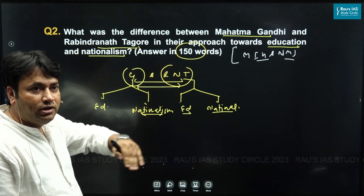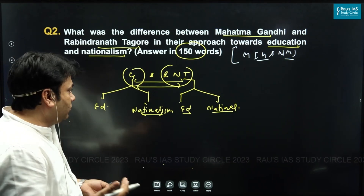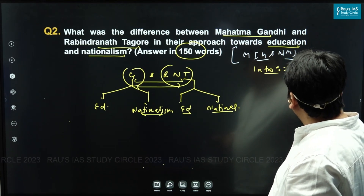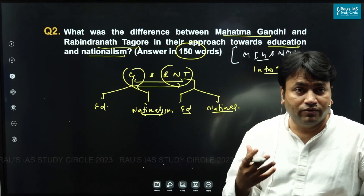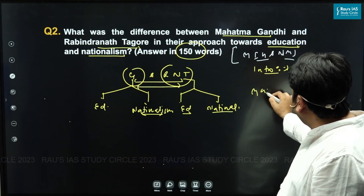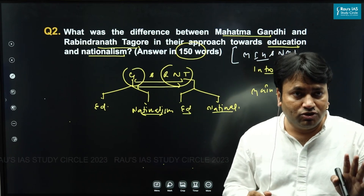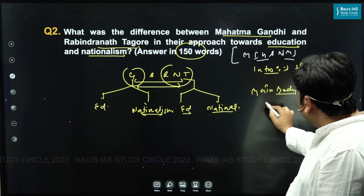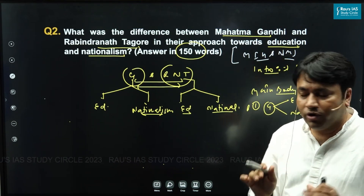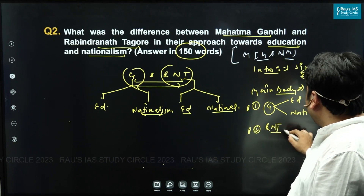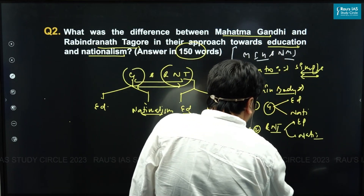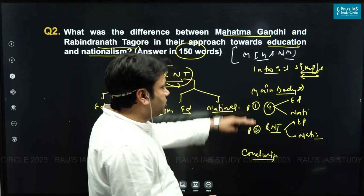While writing the answer, we will follow the IBC format: a simple introduction, then divide the main body into two parts — Part 1 covering Gandhi's ideas on education and nationalism, and Part 2 covering Rabindranath Tagore's ideas on education and nationalism — and finally a simple conclusion.